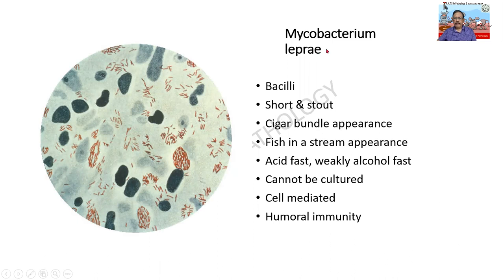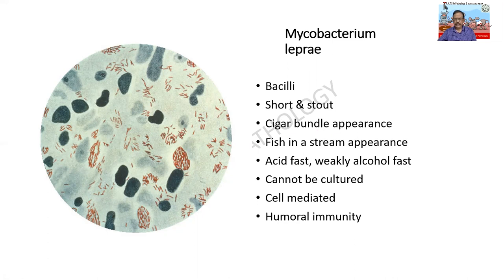Leprosy is caused by Mycobacterium leprae. It is a bacillus - rod-shaped, short and stout - unlike the tubercle bacillus which is slightly longer and curvilinear. It has got a cigar bundle-like appearance. In some places we find it in a kind of bundle called a cigar bundle appearance, and some people describe it as a fish-in-a-stream appearance - the parallelly swimming fish.